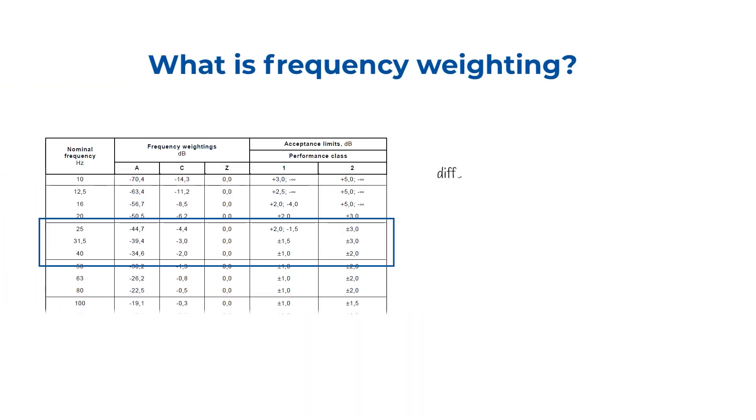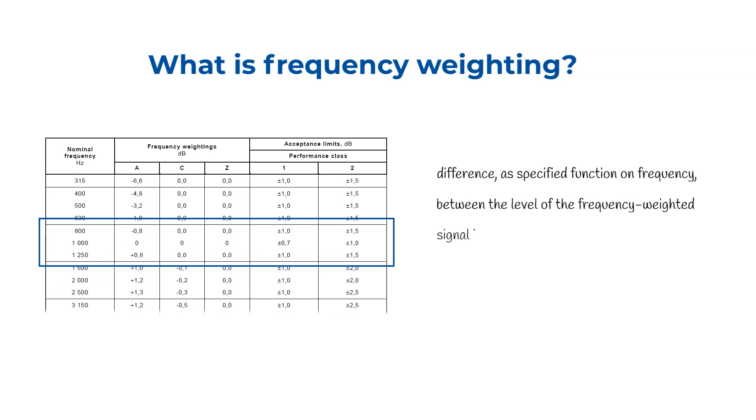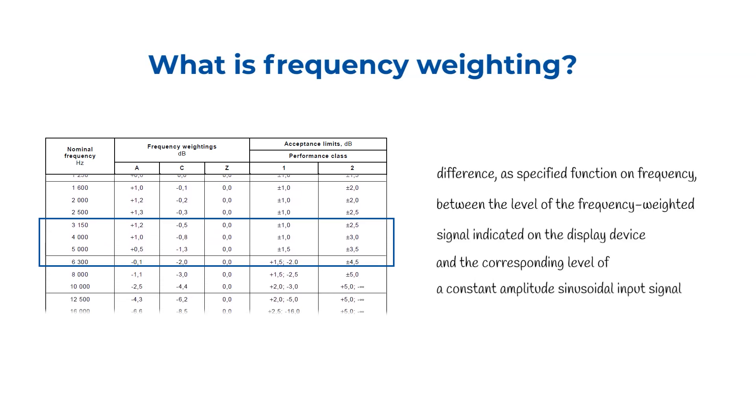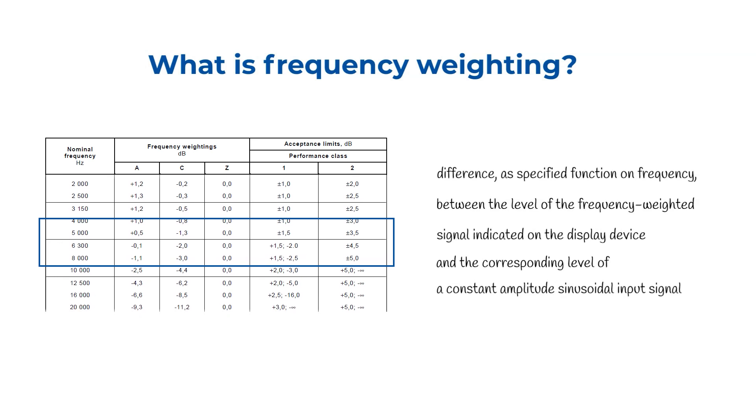IEC standard gives the design goals for frequency weightings A, C, and Z, along with the corresponding acceptance limits for class 1 and class 2 sound level meters.